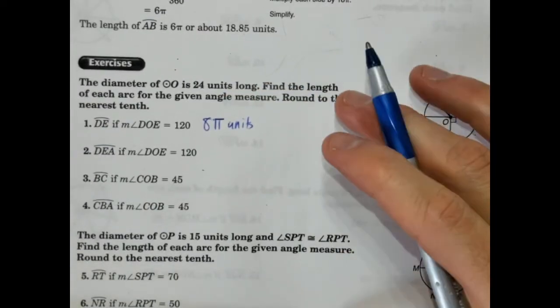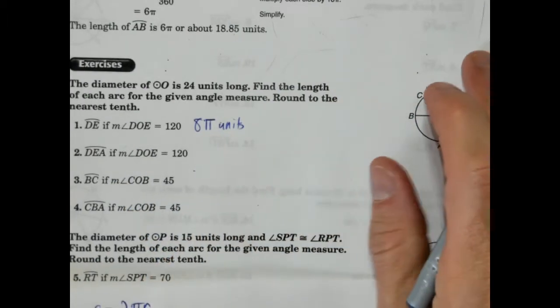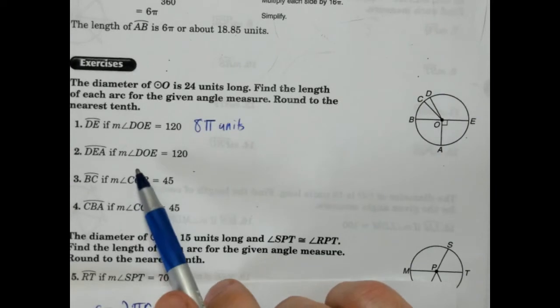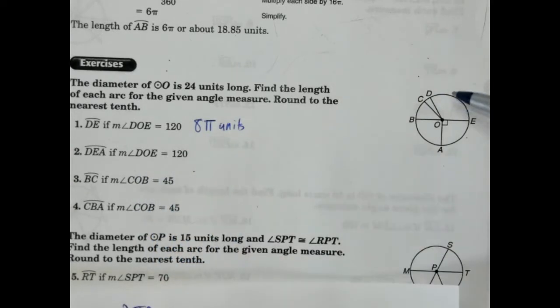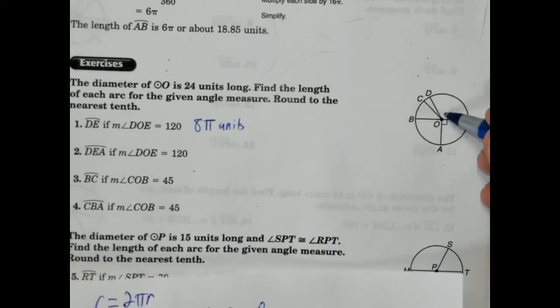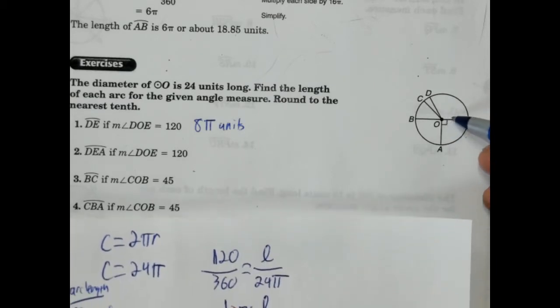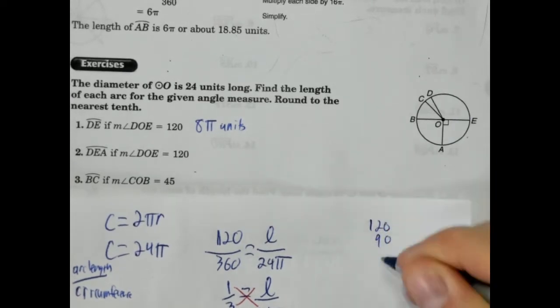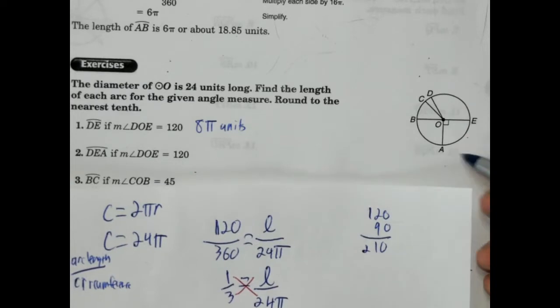Let's try another one. Let's try number two. So DEA if DOE is 120. So DEA would be this entire length here. So we know this is 120. So 120 plus 90 would be 210. I don't know why I couldn't think of that.